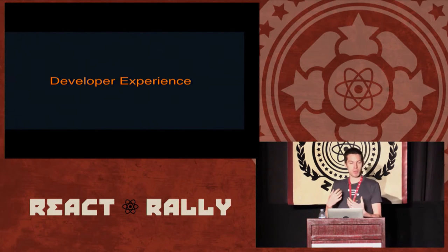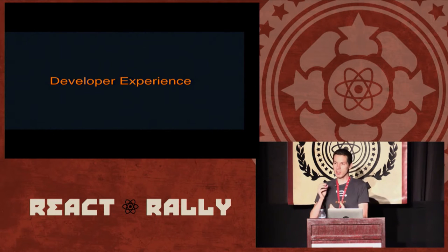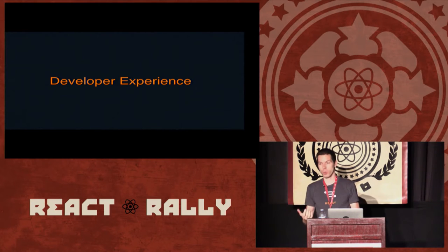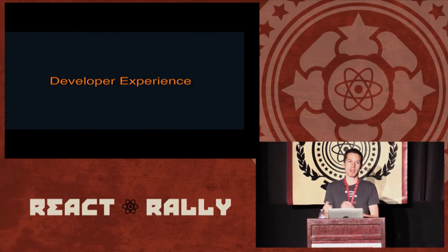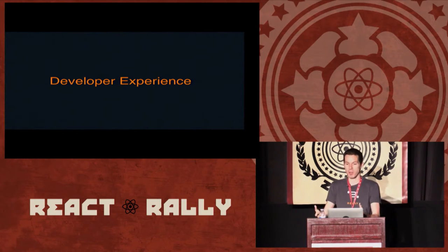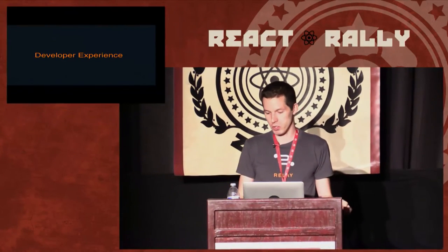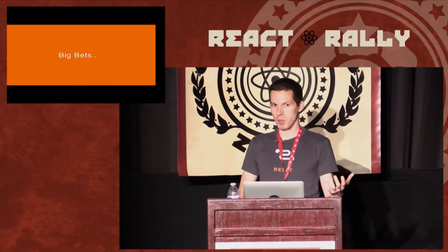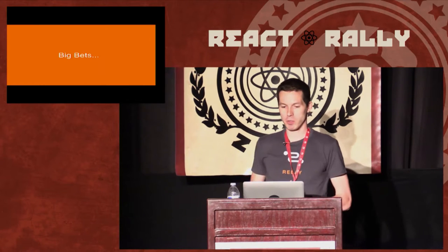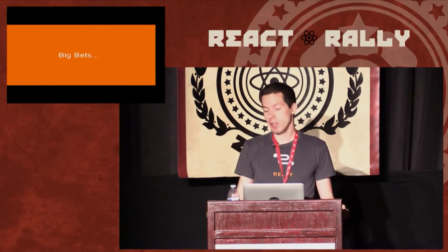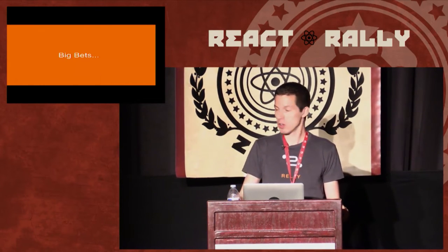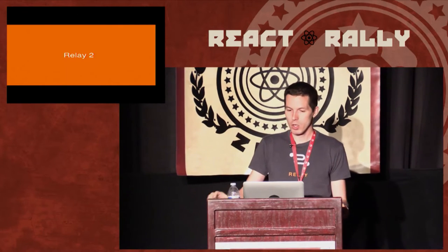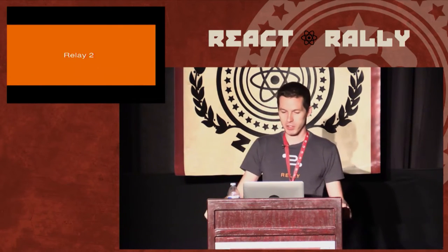The second theme we've been thinking about is the developer experience. We've gotten good feedback about what works and what can be improved in Relay. Relay provides a lot of power to the developer, but it could be easier to use. It turns out we can actually improve speed and the developer experience by making a few key aspects of Relay more explicit. By telling us a little more about what they want to happen, developers help the framework do less work — quite a lot less — while also understanding what's going to happen more. It's kind of a win-win situation.